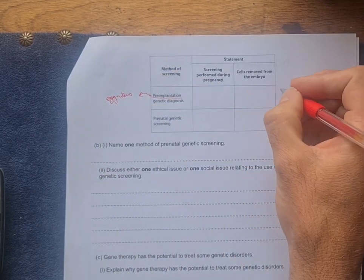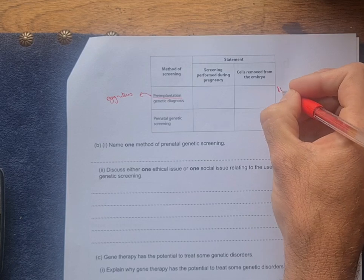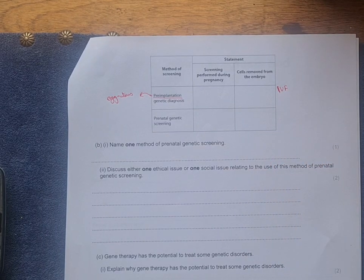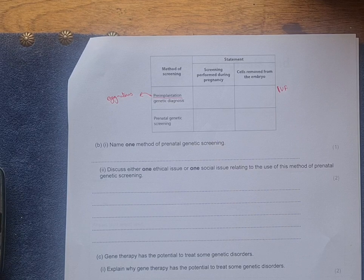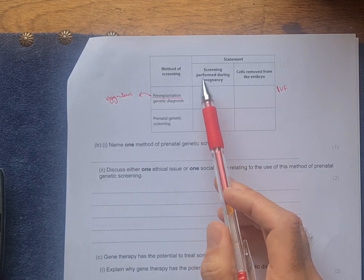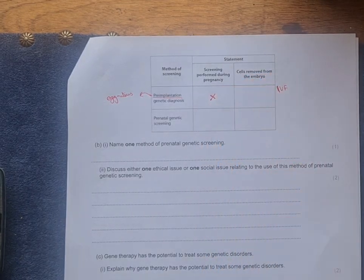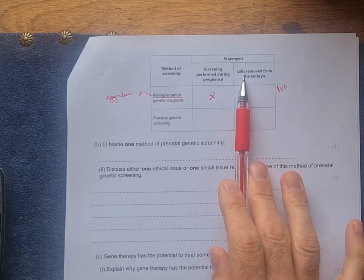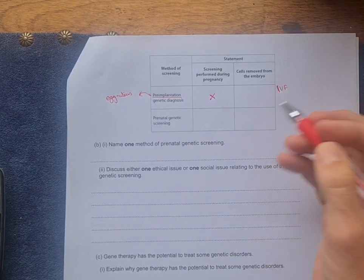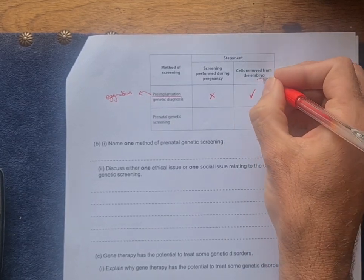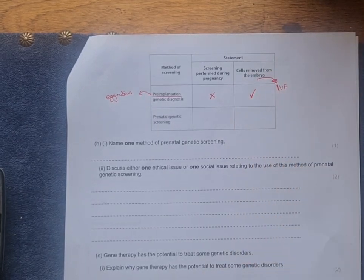And that's usually used in conjunction with IVF, so creating embryos outside and then testing for them. The screening isn't performed during pregnancy, it's before it. And then you have the cells that are removed from the embryos, and those embryos are usually made from IVF.